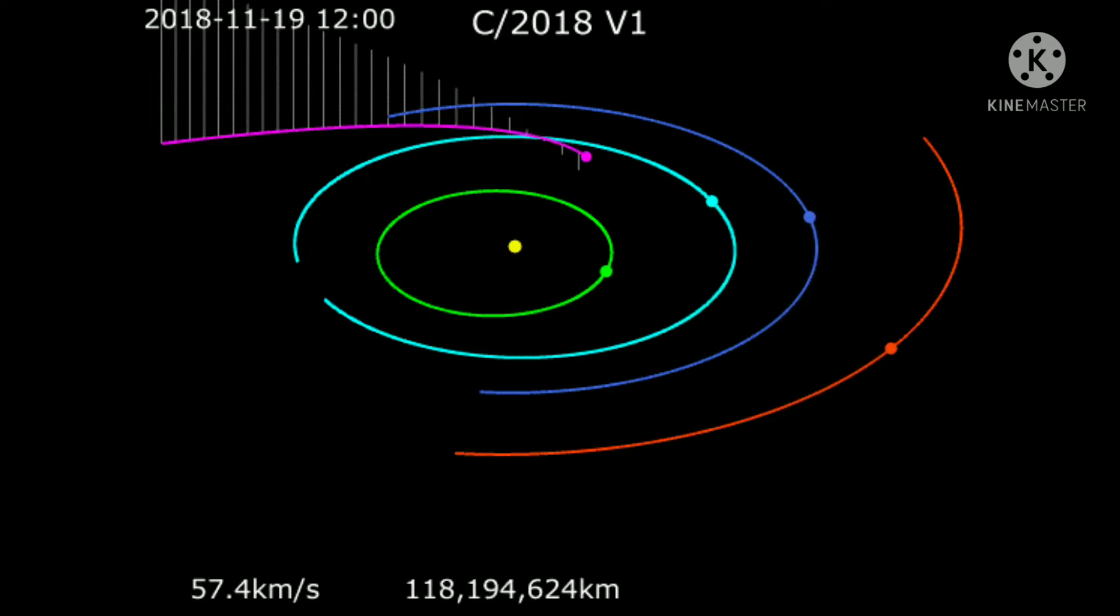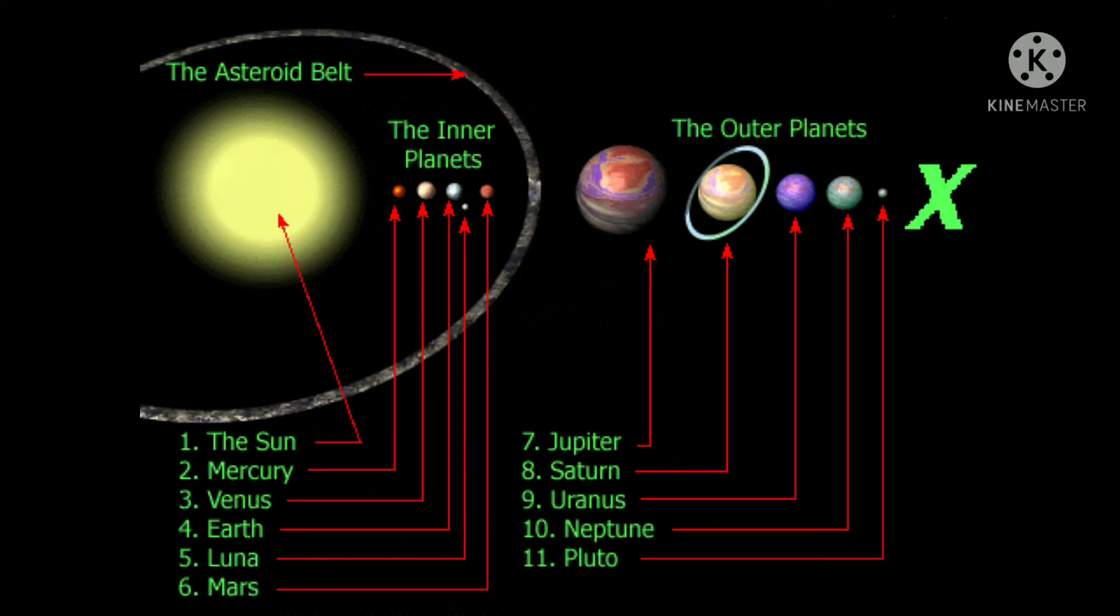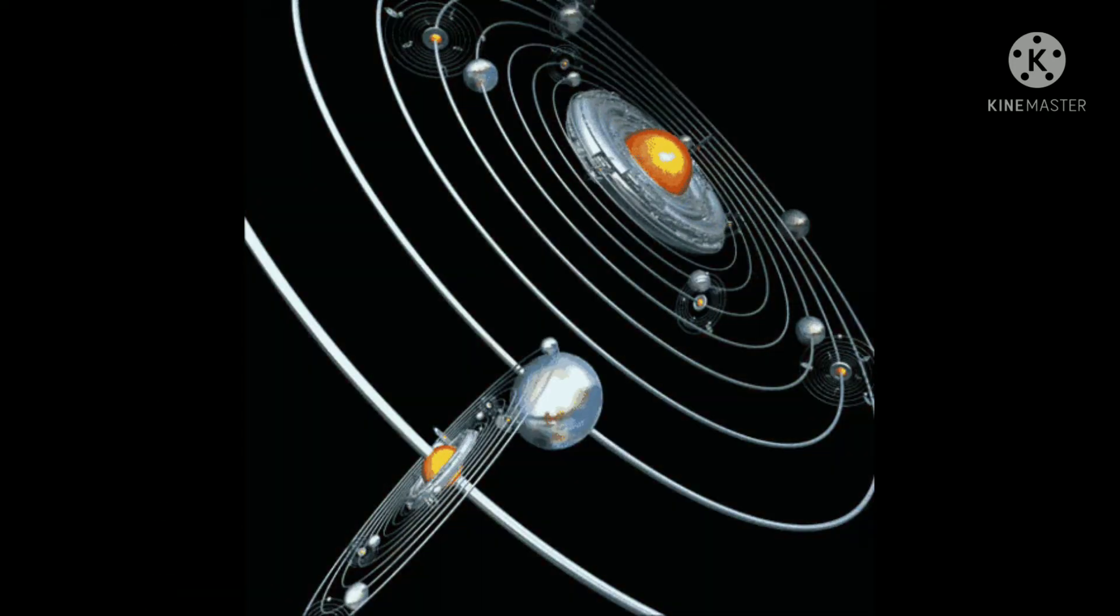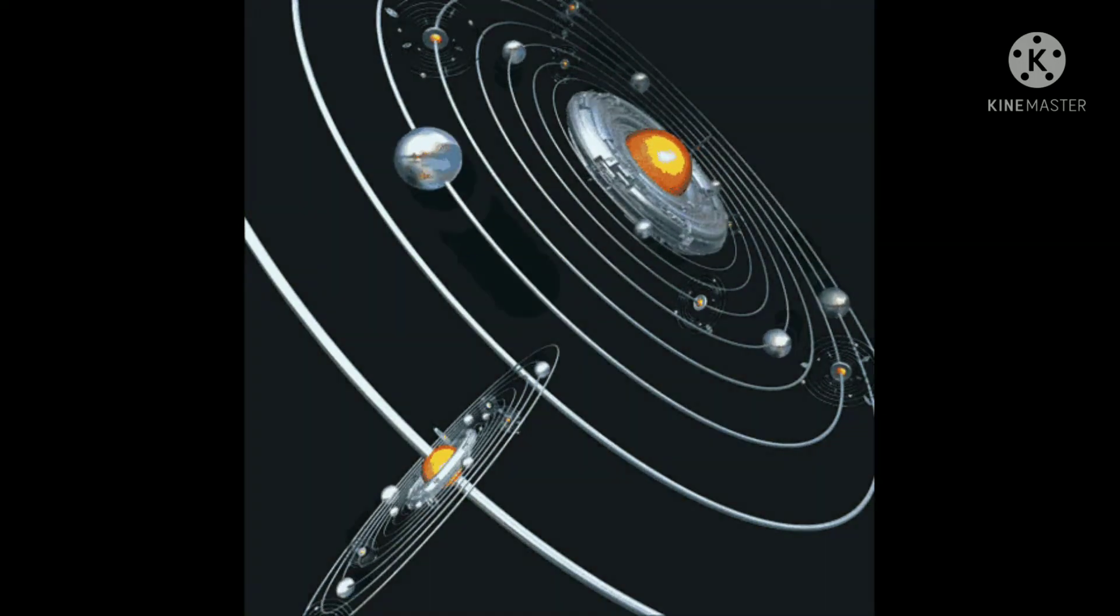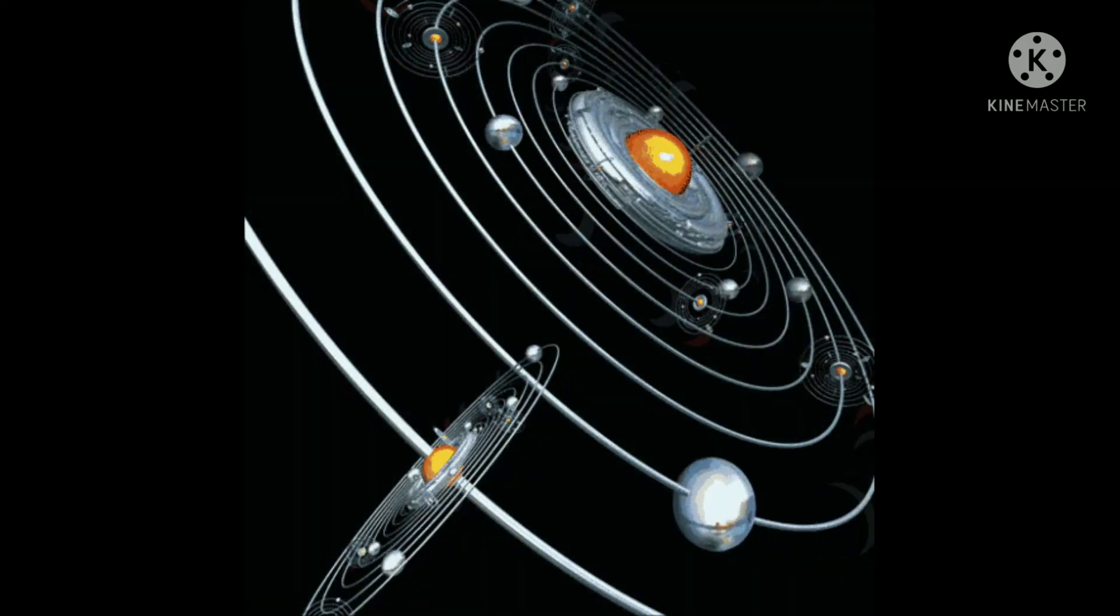With the majority of the remaining mass contained in Jupiter, the four inner system planets are Mercury, Venus, Earth, and Mars. These are terrestrial planets, being composed primarily of rock and metals.